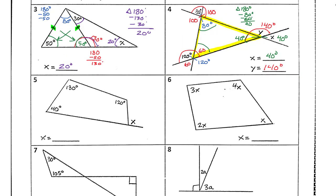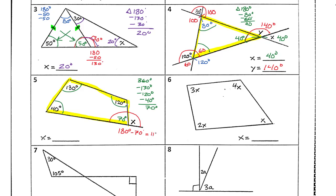For the next example we have a quadrilateral — four sides, so the interior angles add to 360 degrees. Take 360 minus 130 minus 40 minus 120, and we get 70 degrees for the missing corner. But that's not x — x is outside — so we use the half circle rule again: 180 minus 70 equals 110 degrees for x.